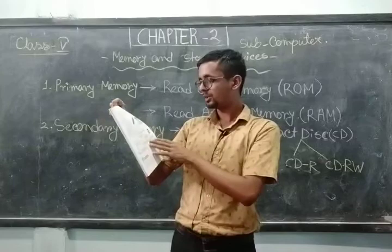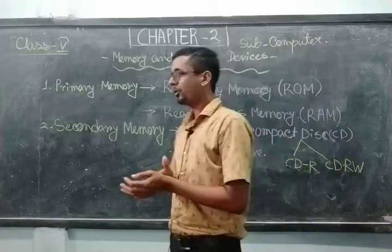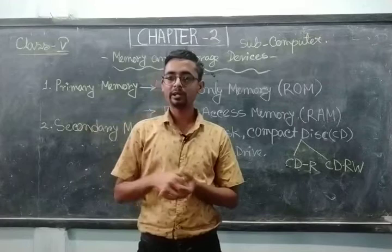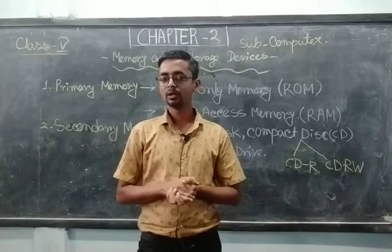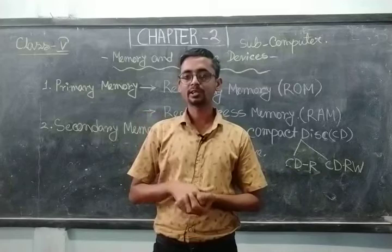So these were the storage systems of a computer. There are two kinds of memory or storage system: number one is primary memory, and number two is secondary memory. In primary memory there are two types — RAM and ROM. In secondary memory there are hard disk, compact disk, Blu-ray disk, DVD, pen drive, and memory card. These are the secondary storage devices.